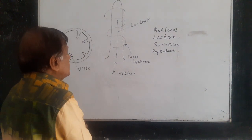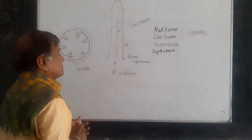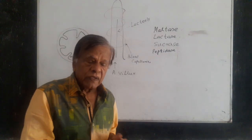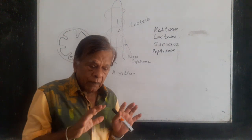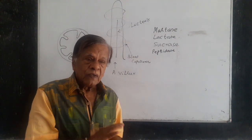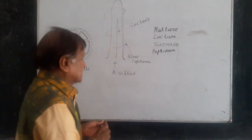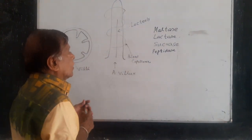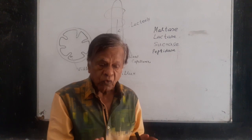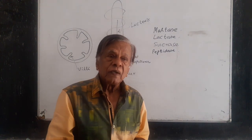Inside the villi, you have blood capillaries and lacteals. Lacteals are capillaries of the lymphatic system — that is, lymph vessels. Blood capillaries absorb glucose, galactose, fructose — which are monosaccharides — as well as amino acids, vitamins, and salts.